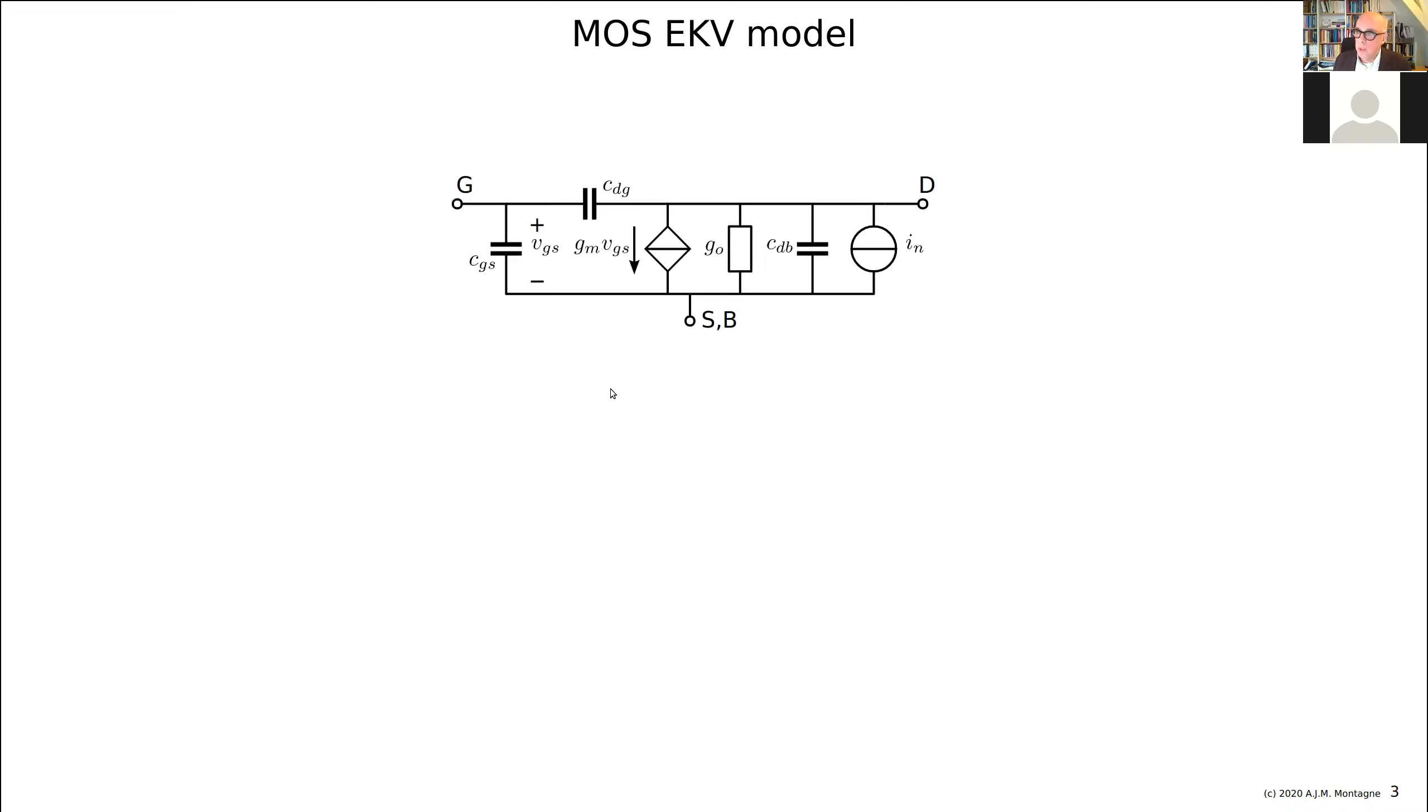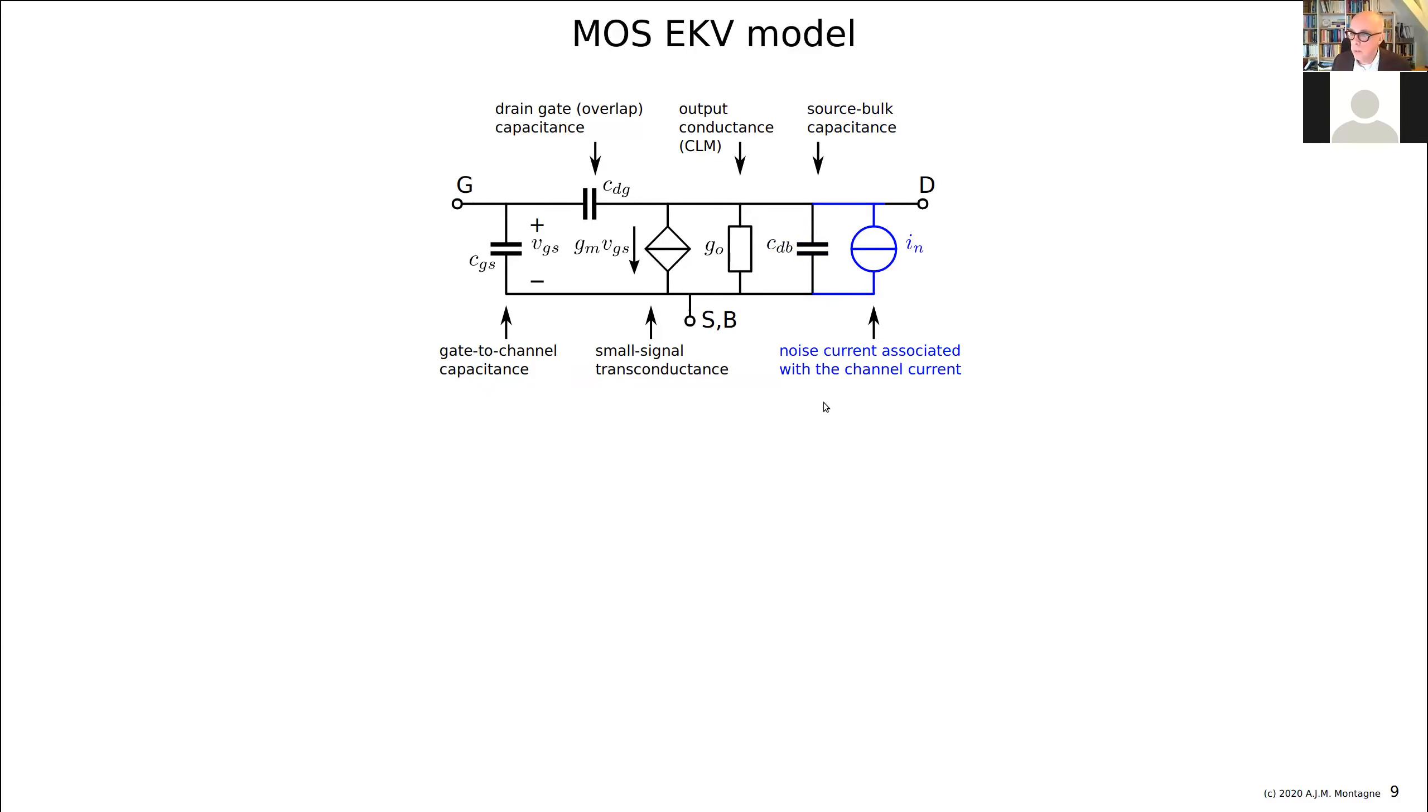So here we are. We have again this model. And I have already explained where all this thing comes from. And there's exactly the same. This should be drain bulk instead of source bulk. The same error, because it's just the same picture. And then we were asking ourselves,